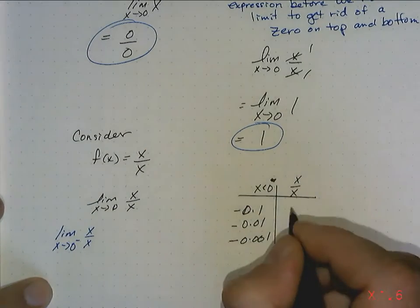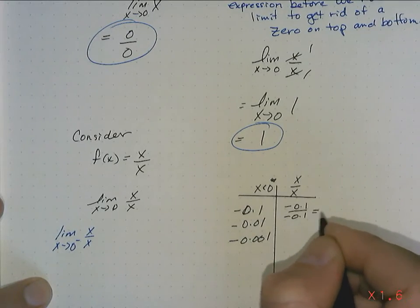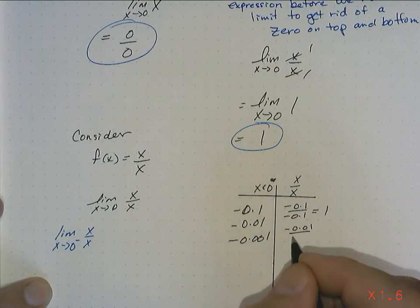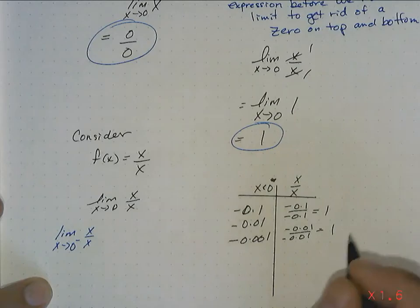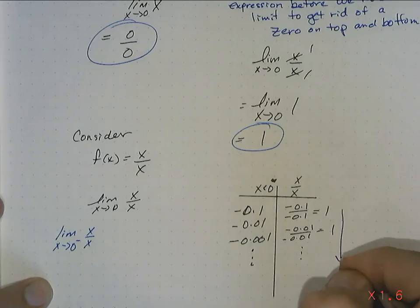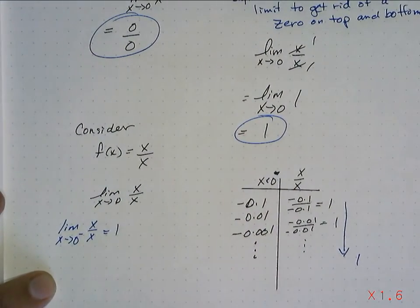And look what's happening. It's going to be negative 0.1 over negative 0.1, and that equals 1. This one's going to be negative 0.01 over negative 0.01, and that's going to be 1. And the next one's going to be 1. And if we continue all the way down, you're going to see that it's going to be approaching 1. So the left-hand limit is definitely 1.